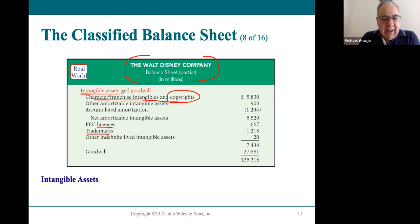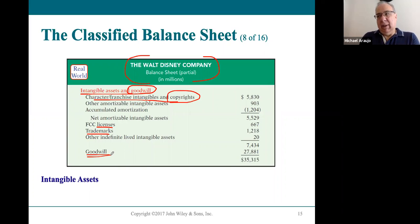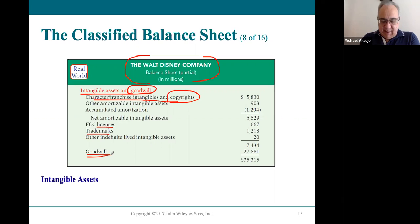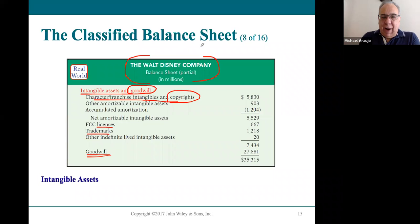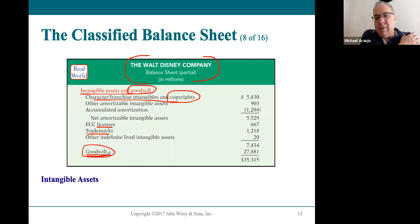The other interesting intangible asset you'll hear about is goodwill. Goodwill is what happens when a company buys another company — for example, Disney buying Marvel. If you look at Marvel's books and their assets are worth say $1 billion, but Disney offers $5 billion to buy the company, they're buying $1 billion worth of assets for $5 billion. That extra $4 billion Disney is paying for Marvel's characters? That's what goodwill is — anything above and beyond the value of the assets that a company is paying.